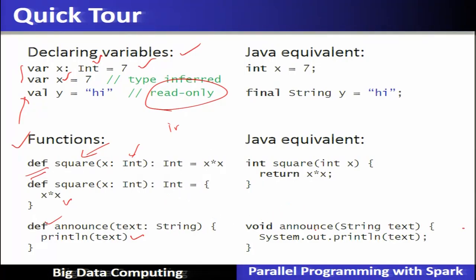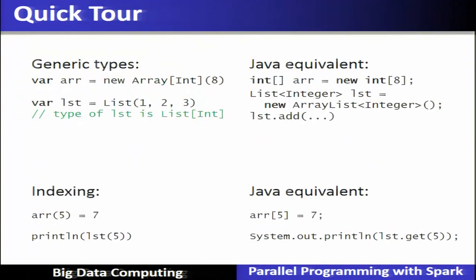The next concept is generic types. We can specify an array type as Array[Int]. Similarly, we can define a list simply as List(1, 2, 3, 4), which is of type List[Int]. We can also specify indexing — for example, storing value 7 at the fifth element of an array, equivalent to Java array indexing. Printing the fifth element of the list will return the value stored there.